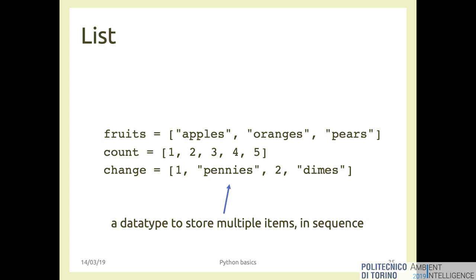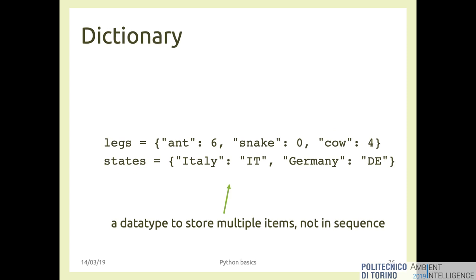We had a look at loops — basically for loops and if conditionals — and we ended more or less here, speaking about lists. We saw that lists are a data type to store multiple items in sequence. You can put almost everything in a list — strings, numbers, mixed — and you retrieve an element by its index: the first element has index zero, the second has index one, and so on.